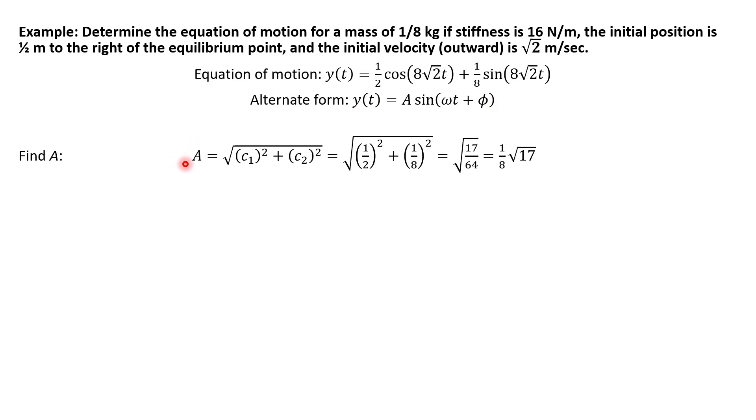And so first, let's find A. So since we found c1 and c2 already, we just plug into our formula, and we get that A is one-eighth times square root 17. And then we've already found omega, so we have to just find phi. And so for phi, we're going to use the fact that tangent phi is c1 over c2. So we know that tangent of phi is four. However, we need to recall some things from trig to be able to figure out what phi is.